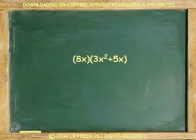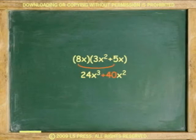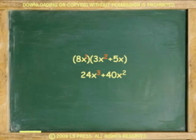For example, multiply. 8 times 3 equals 24, and 8 times 5 equals 40. Notice that the rules of multiplication of binomials have been applied. The exponents have been added: 1 plus 2 equals 3 in the first product, and 1 plus 1 equals 2 in the second one.